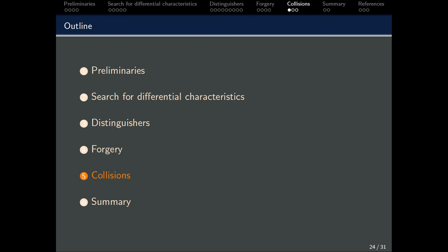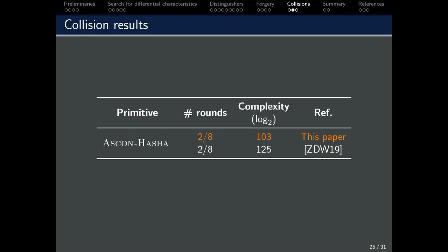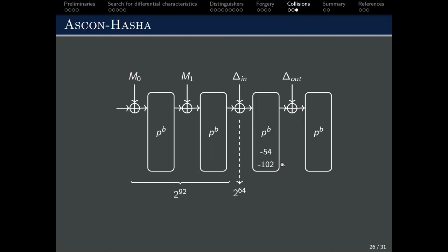Next, we will move on to the collisions. For collisions, if we reduce the number of rounds to 2, we manage to find one with a complexity of 2 to the power of minus 103. This is in comparison with the previous best result of 2 to the power of minus 125. The idea is this. For the 2 round characteristics that we are using, we have 54 constraints in the first round, and 102 constraints in the second round. So this is the total probability of the characteristics that we are using.